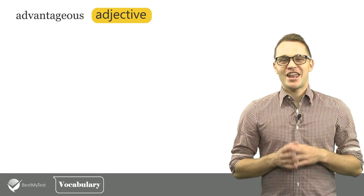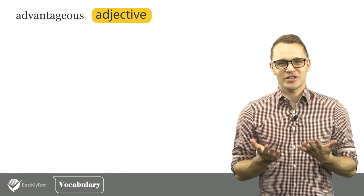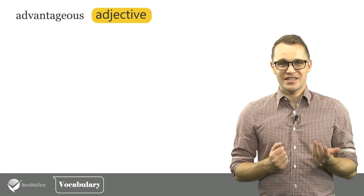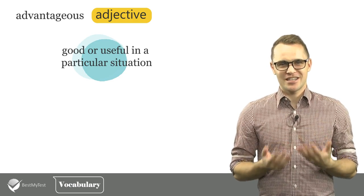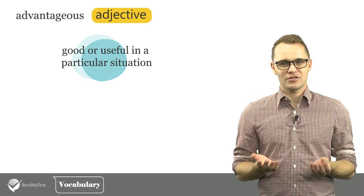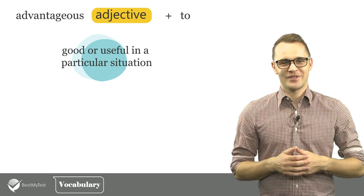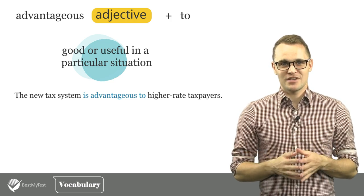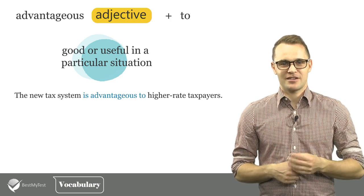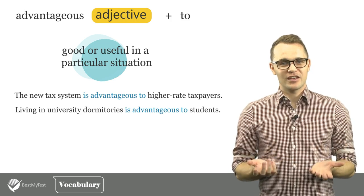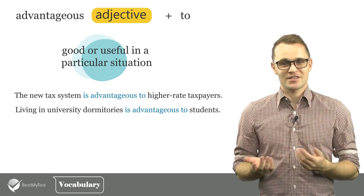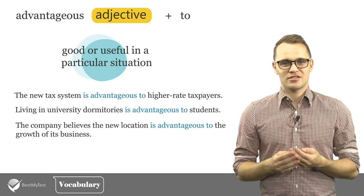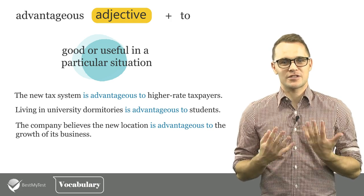Now you know how to use the word advantage. Let's shortly talk about its adjective form, advantageous. Advantageous means good or useful in a particular situation. It is often used with the preposition 'to.' For example: the new tax system is advantageous to higher rate taxpayers. Living in university dormitories is advantageous to students. Or: the company believes the new location is advantageous to the growth of its business.